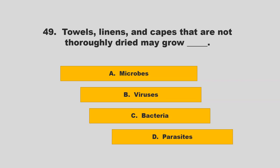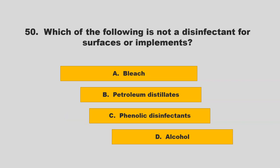Towels, linens, and capes that are not thoroughly dried may grow blank. Options: microbes, viruses, bacteria, or parasites. The correct answer is C: bacteria.